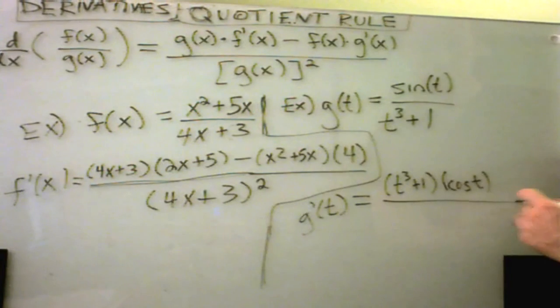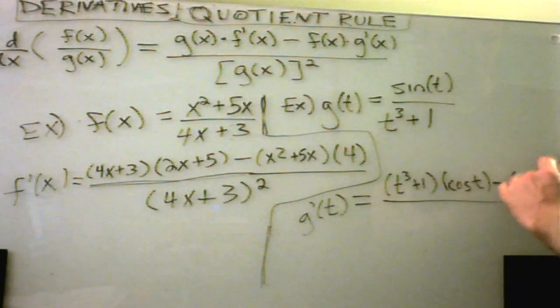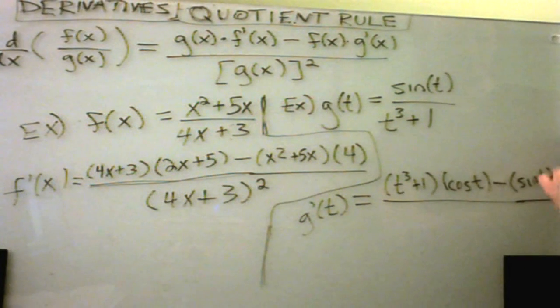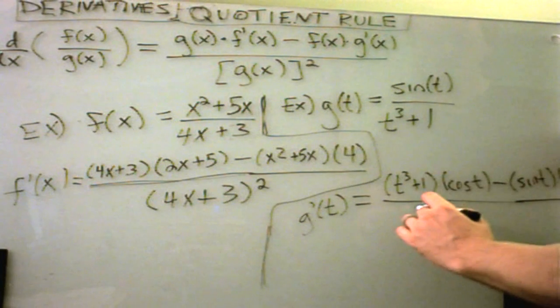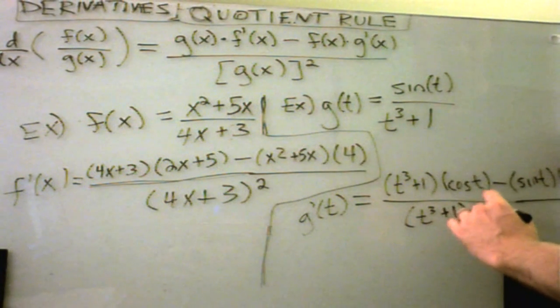And then, put our minus sign in between. We'll leave the numerator alone. Multiply that by the derivative of the denominator, which will be 3t squared. And then, again, we just take the bottom thing, t cubed plus 1, and square that.